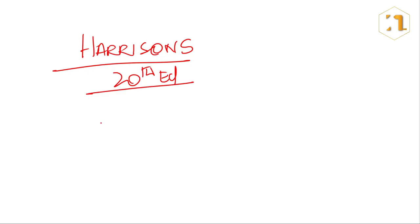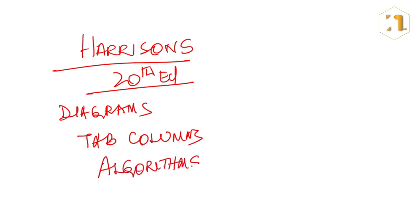So how do you prepare from Harrison? You have to go through the diagrams, the tabular columns, and the algorithms. So we have to use our available time, whatever we have allotted for Part A, to learn the diagrams with their footnotes, the text below the diagrams, the tabular columns, and algorithms. This method will definitely give you at least somewhere around 30 marks in Part A, and the rest of the time, the maximum amount of time, you have to focus on your Part B preparation.